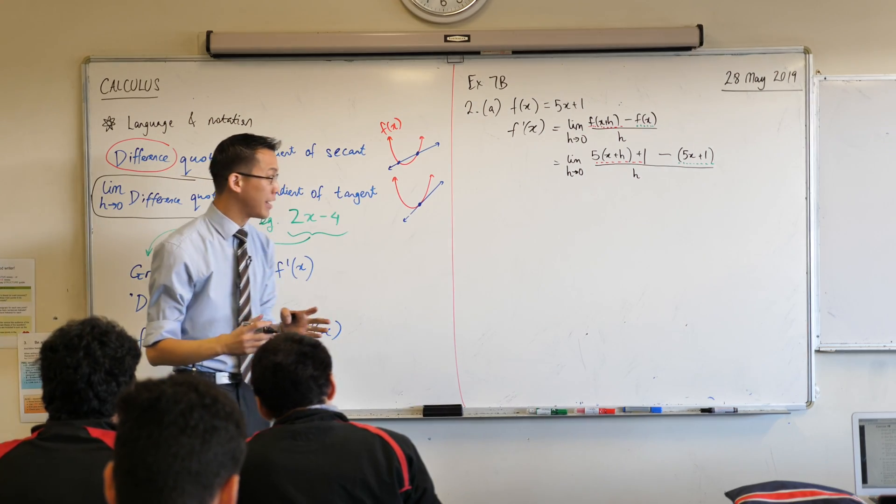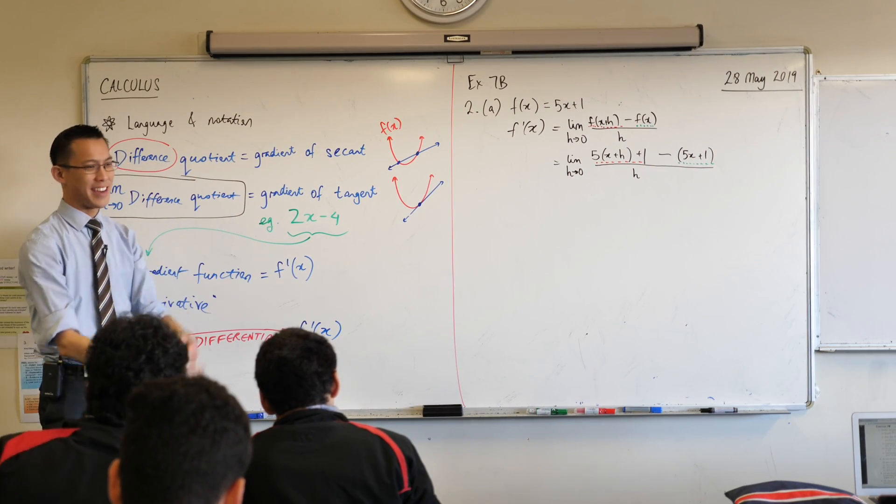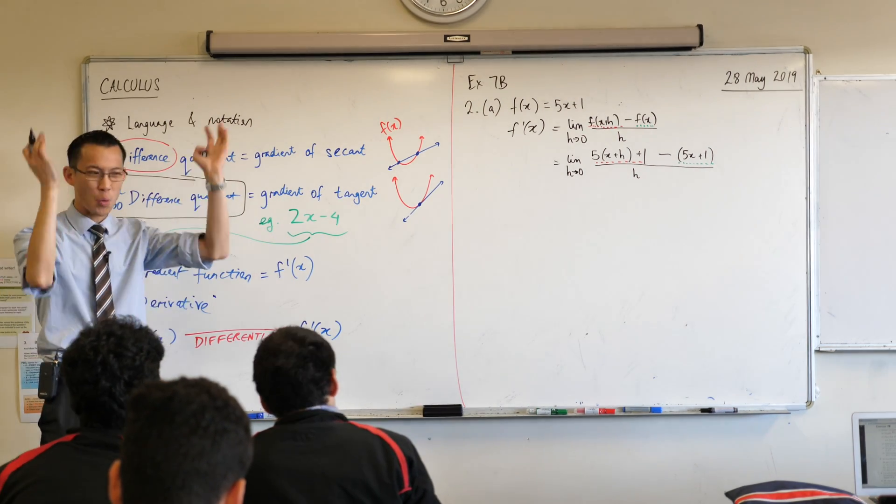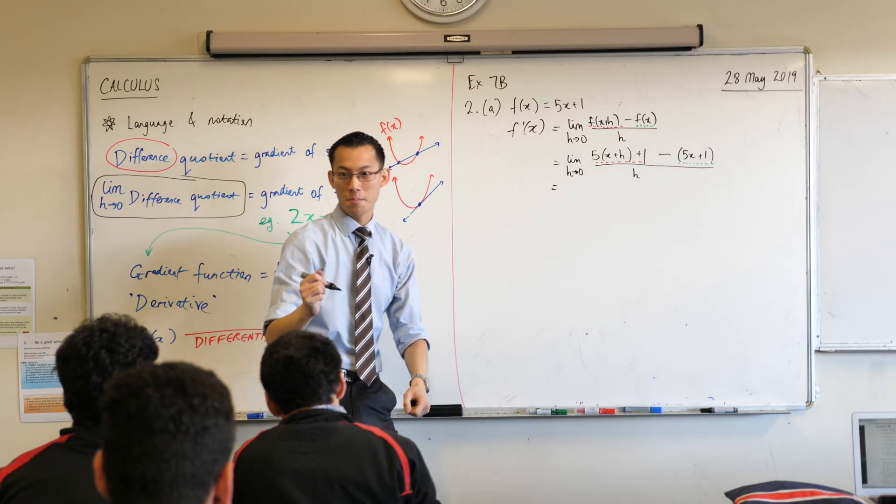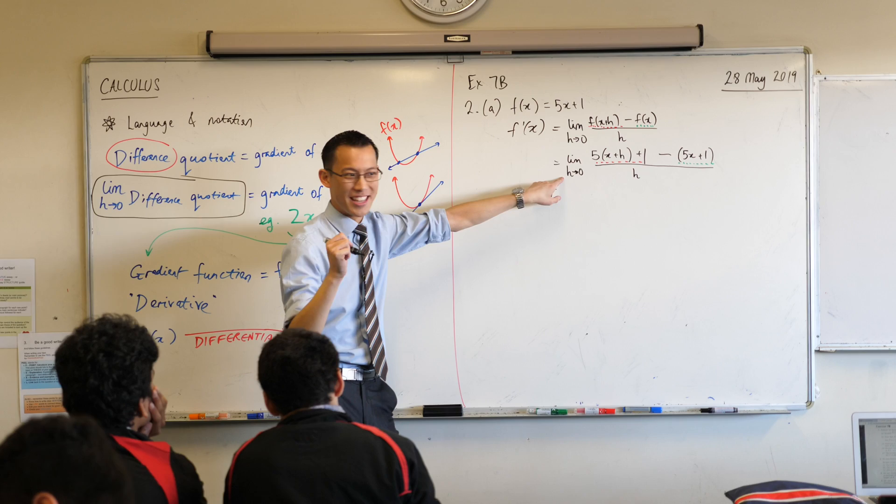Now at this point last time, actually, we had something. I threw you guys right in the deep end. I had something much more complicated. There was squares and all that. This is easy to deal with, right? First thing to write down is? 5x. Nah. First thing to write down is? The limit.